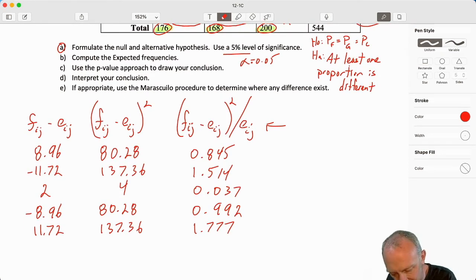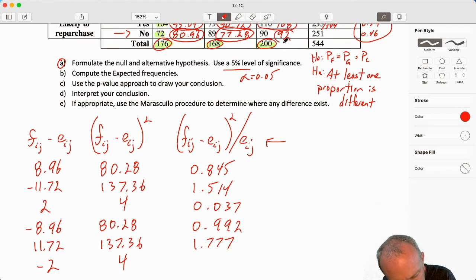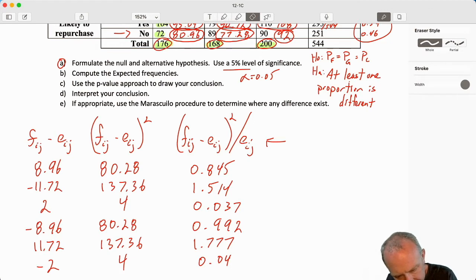And finally, the last one is going to be negative 2. That's still going to be 4. And now I'm dividing here by 92. 0.043. Well, 4, I suppose, if I'm being very careful.